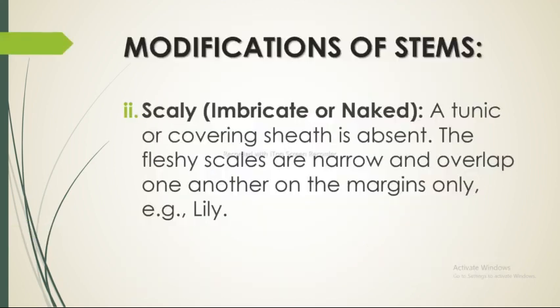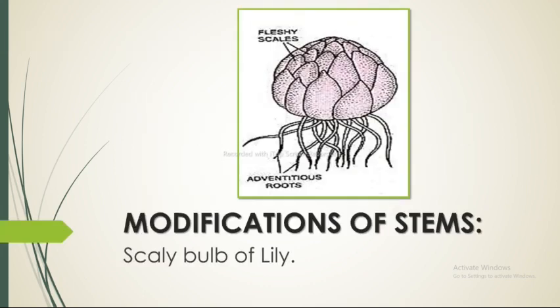The next type is the scaly and imbricate, or naked bulb. A tunic or covering sheath is absent. The fleshy scales are narrow and overlap one another on the margins only, for example lily. This is the scaly bulb of lily, which includes the fleshy scales and adventitious roots, as shown in the figure.